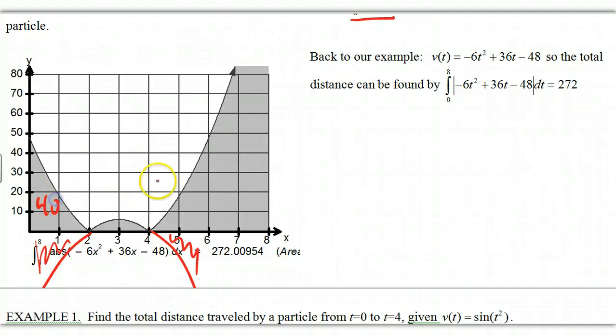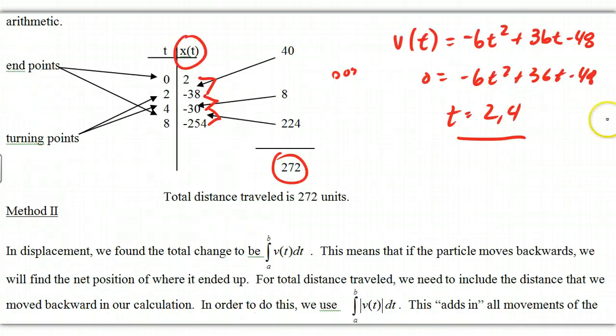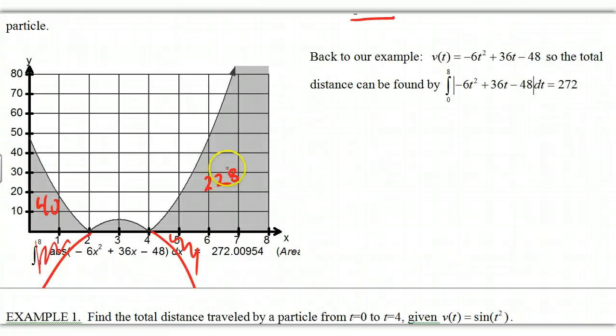So this corresponds with my 40 up here. This would be my 224. And this would correspond with my 8. So that's equivalent to doing that T-chart on that previous page. However, if we have our calculator, all we have to do is set up the integral to find the total distance traveled with the absolute value. Put the absolute value on the inside, not the outside of the integral. And we can just get the value straight away with 272. So this method works great if you have your calculator.